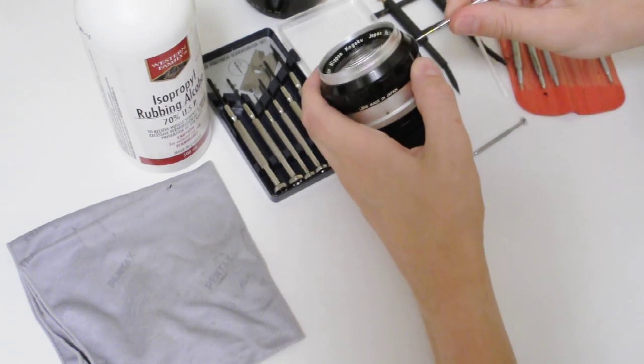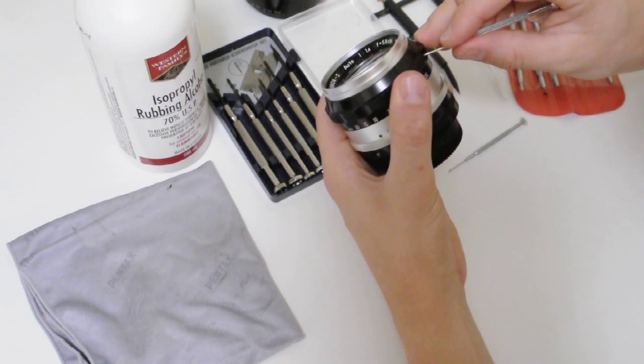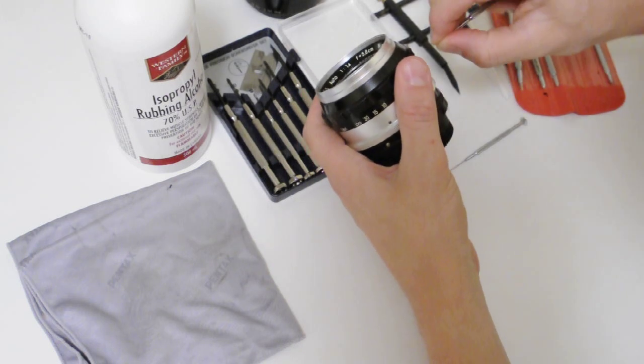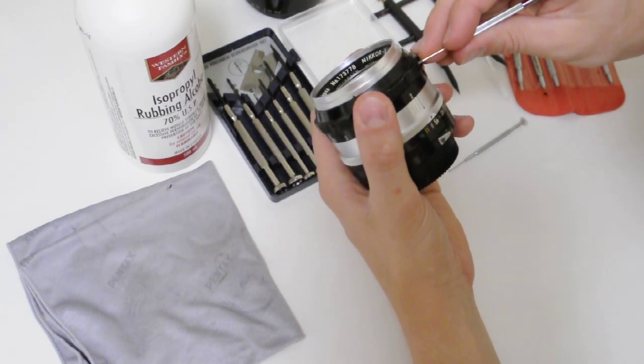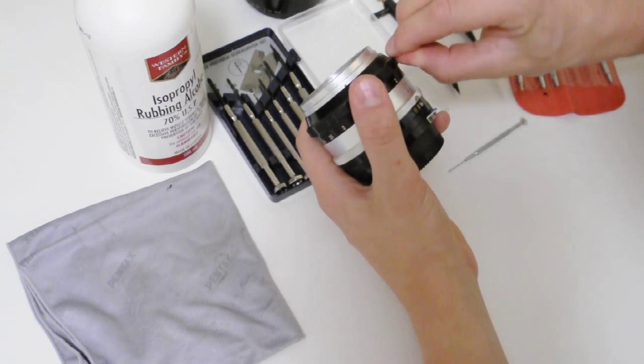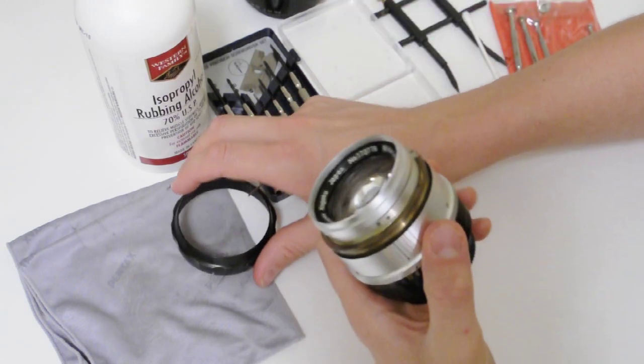I already cleaned the aperture on this lens, so this is more or less just showing you how to take the lens apart. I put everything back together very loosely, pull that off just so I can show you how to do this quickly.